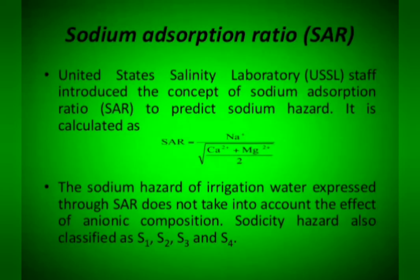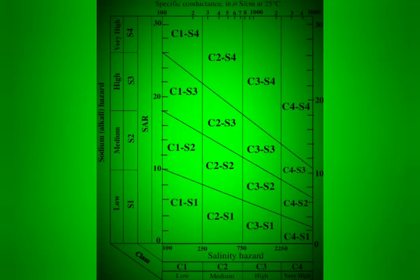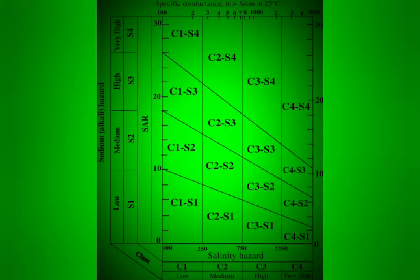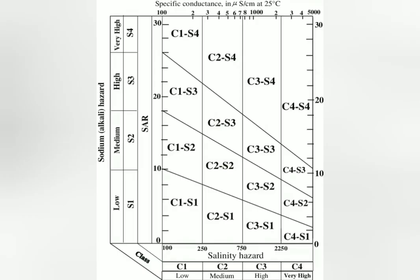Sodicity hazard is also classified as S1, S2, S3, and S4. In the USSL chart, salinity is noted as C1, C2, C3, C4 and sodicity as S1, S2, S3, S4. The interaction of salinity and sodicity is shown here. For example, C1-S1 represents low salinity and low sodicity — not harmful. However, C1-S4 causes high sodicity hazard, so we need to address the sodicity hazard.